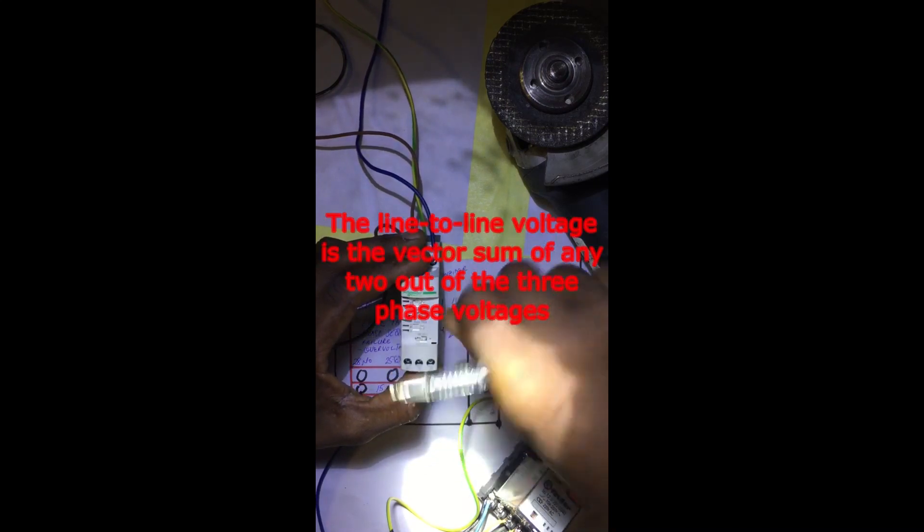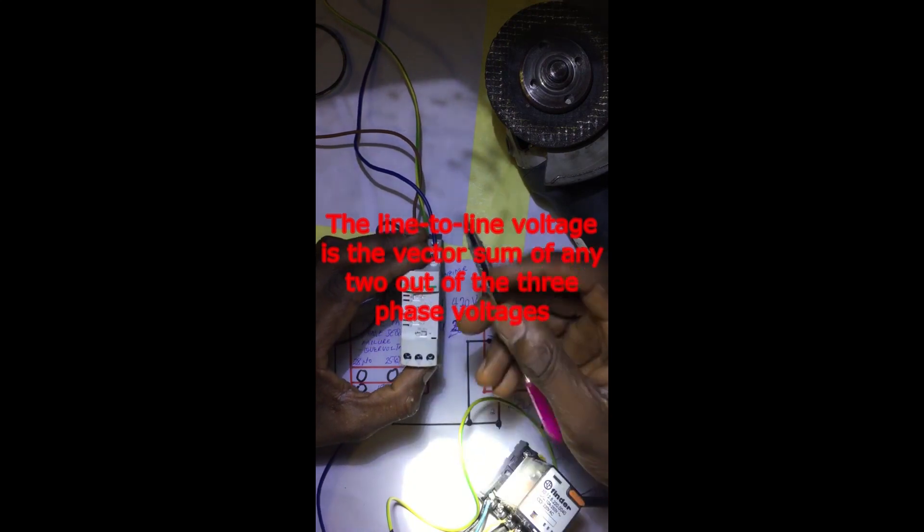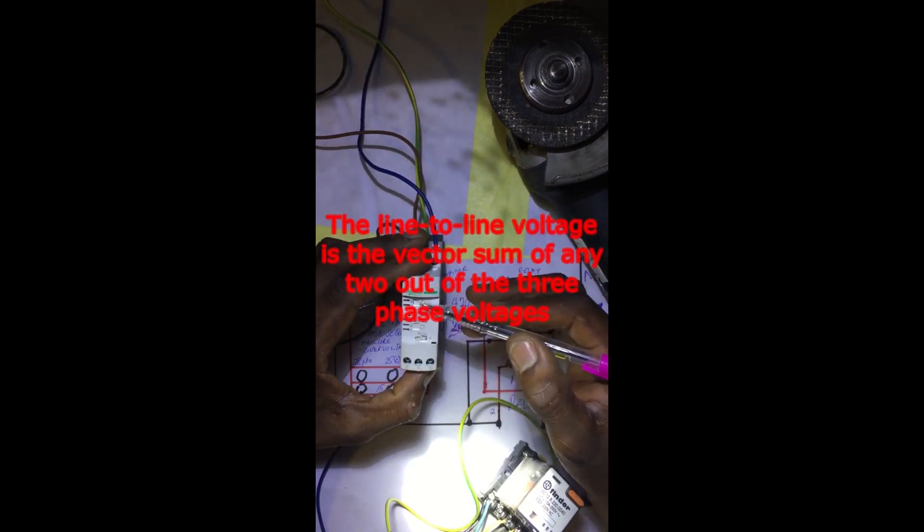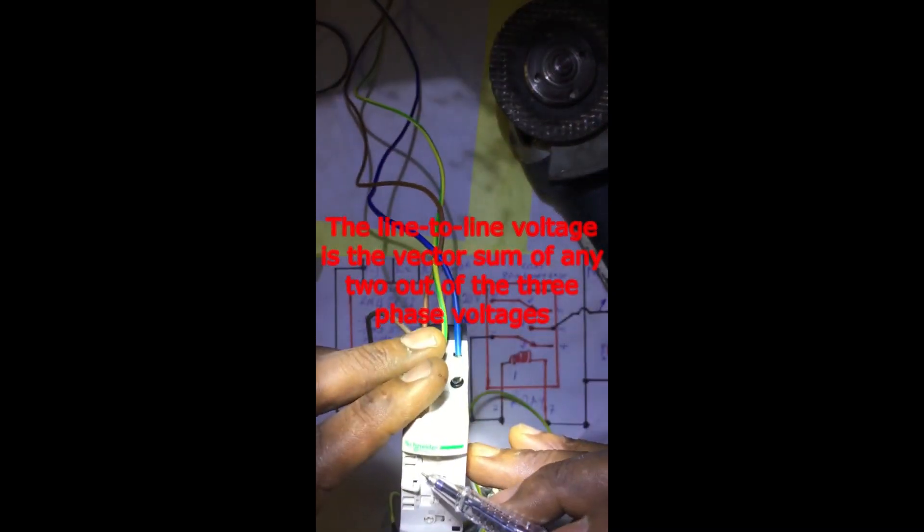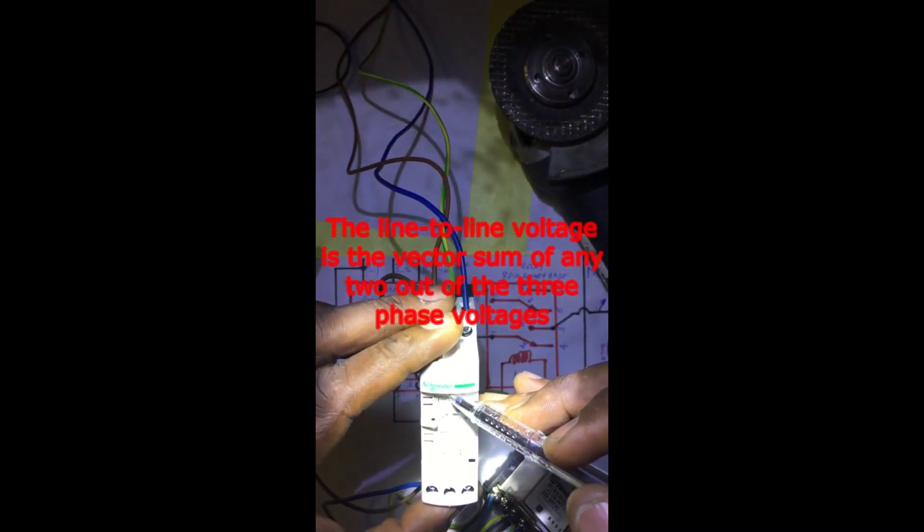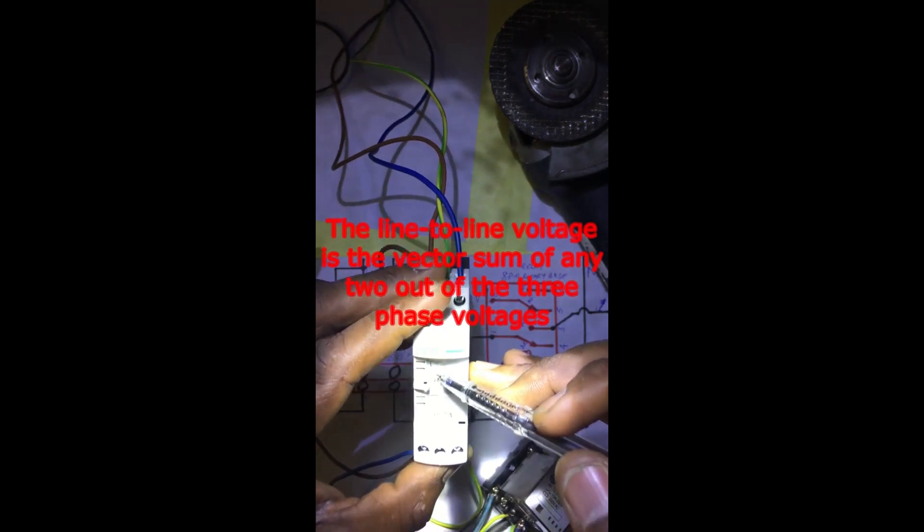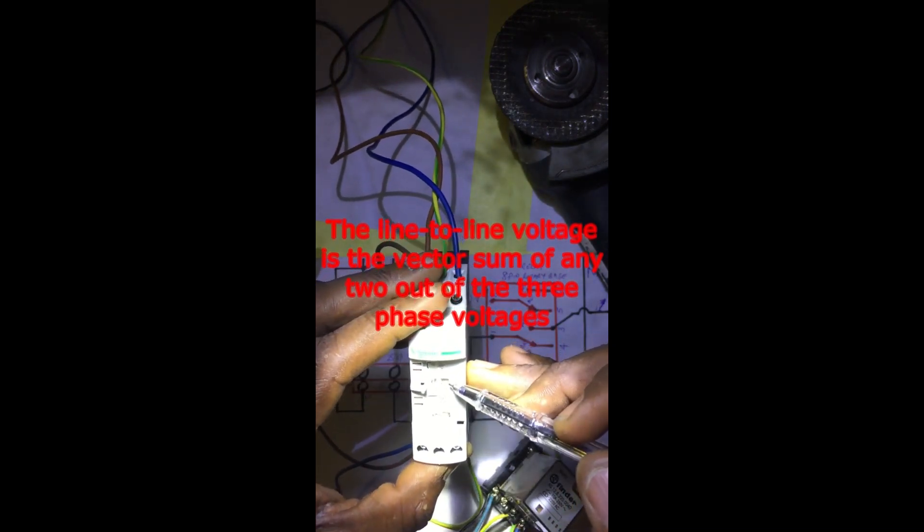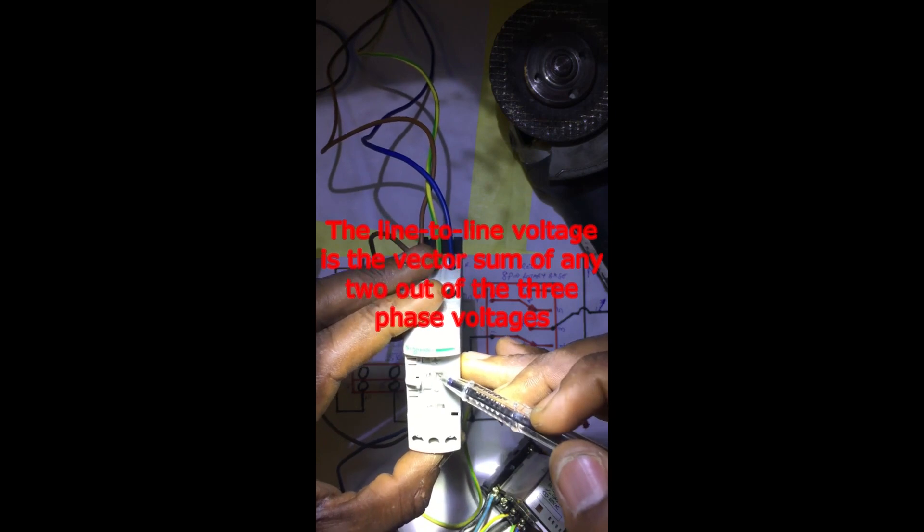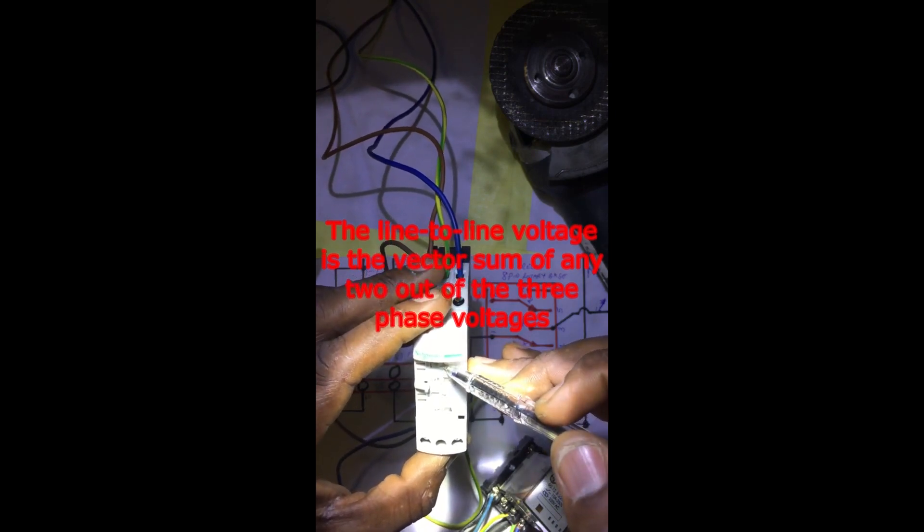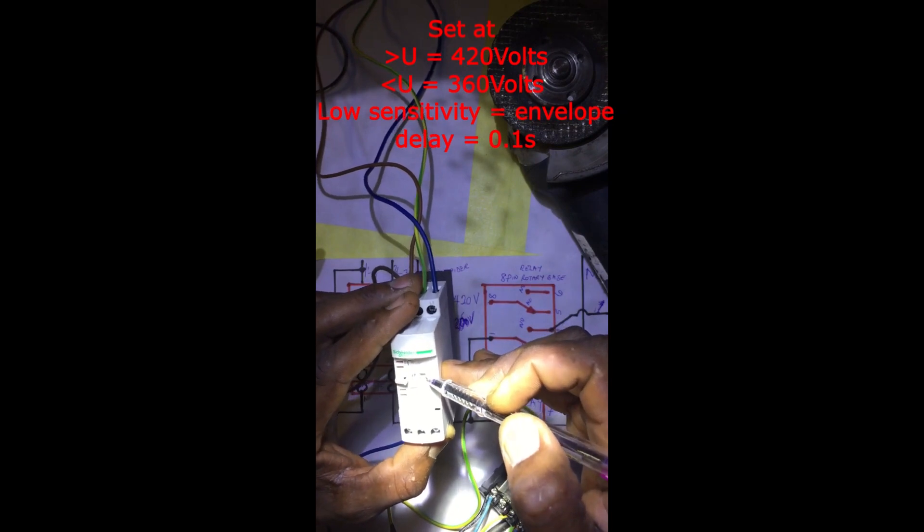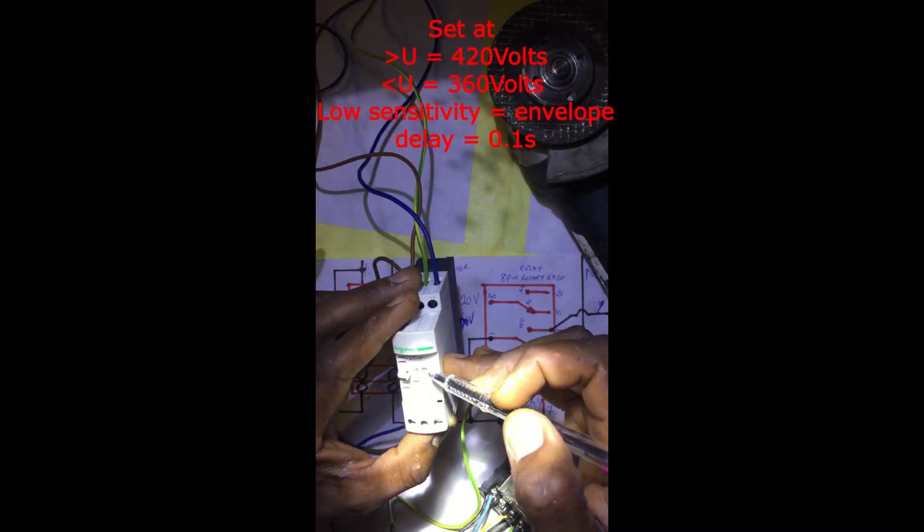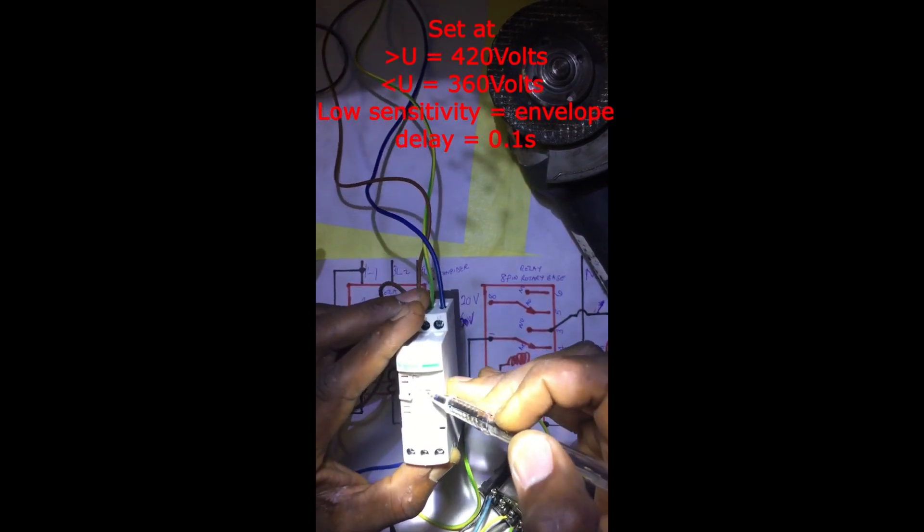Now we have set it at 420 as our upper threshold. The lower threshold increases by turning it clockwise. So we set the lower threshold at 360 and upper threshold at 420.